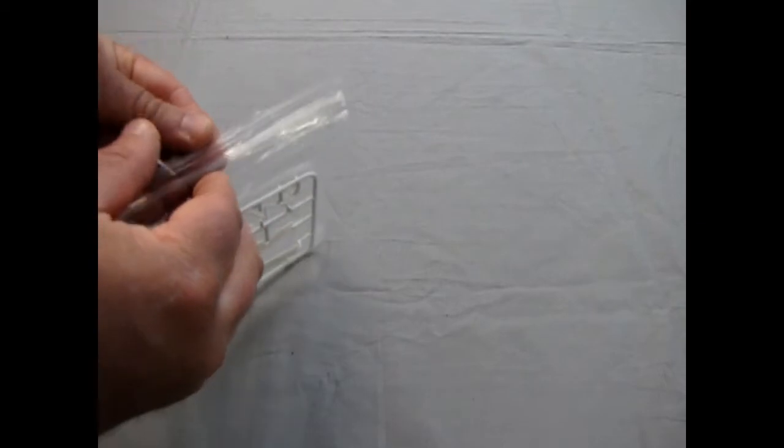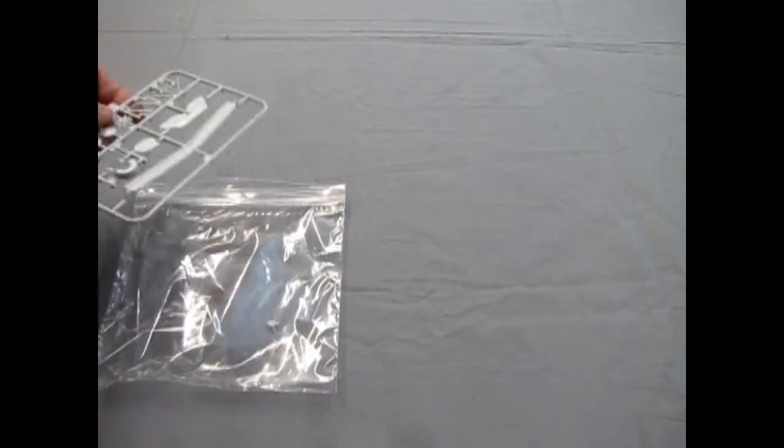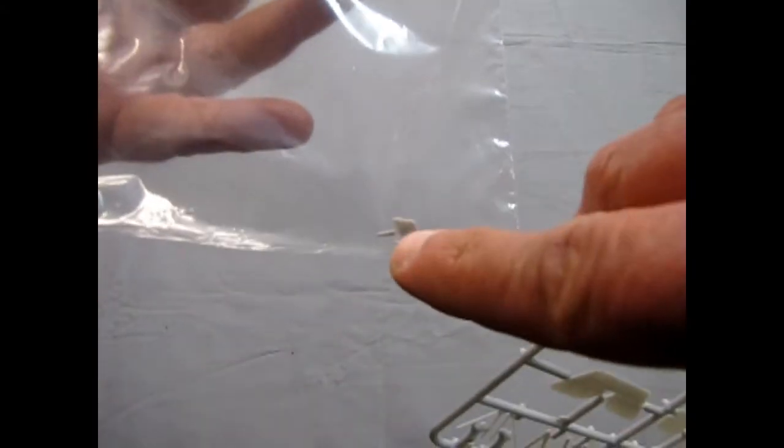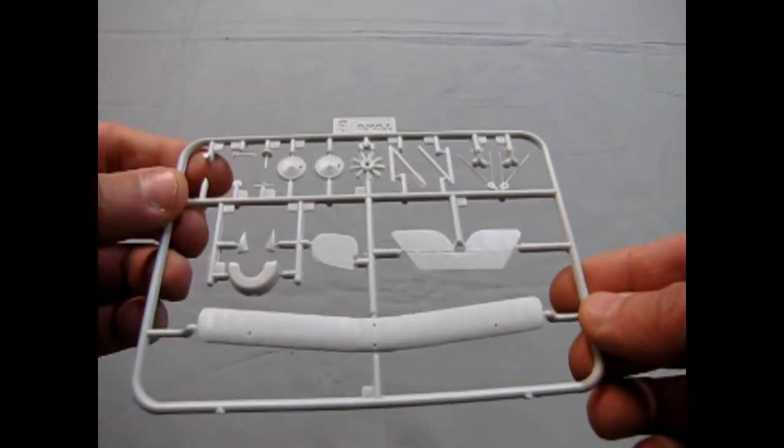And there's really only two parts trees. This is, of course, one 72nd scale, so it is quite tiny. That's why the plastic Ziploc is there. The little seat popped out.